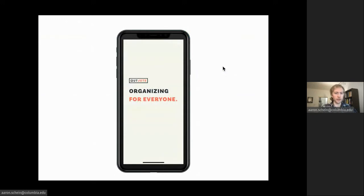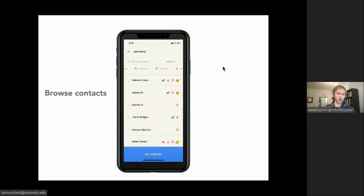We worked with this app called Outvote, which helps its users systematize the process of reminding their friends to vote. A user will first sync their phone contacts with the app, and the app will then display public information about their friend's voter registration, like what party they're registered with, what state they're registered to vote in.